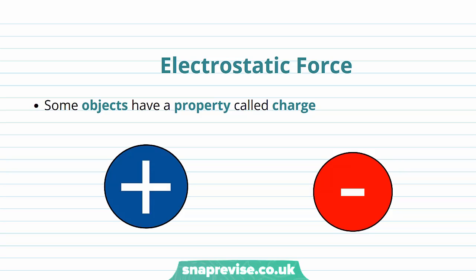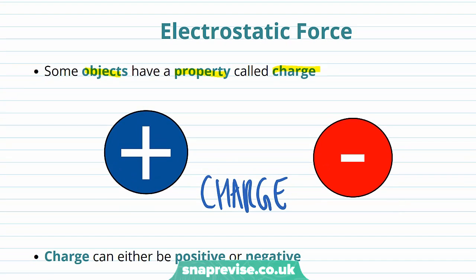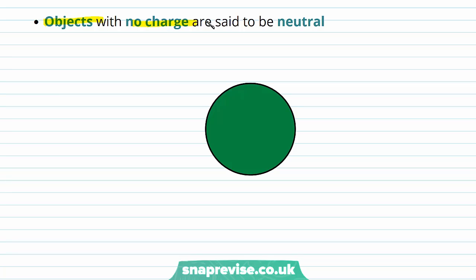We're first going to talk about a force called the electrostatic force. Some objects have a property called charge, and we have two objects that possess charge here. Charge can be either positive or negative. So this charge on the left is positive, and this charge on the right is negative. Objects with no charge are said to be neutral, and here's an example of a neutral particle. Its charge is equal to zero.